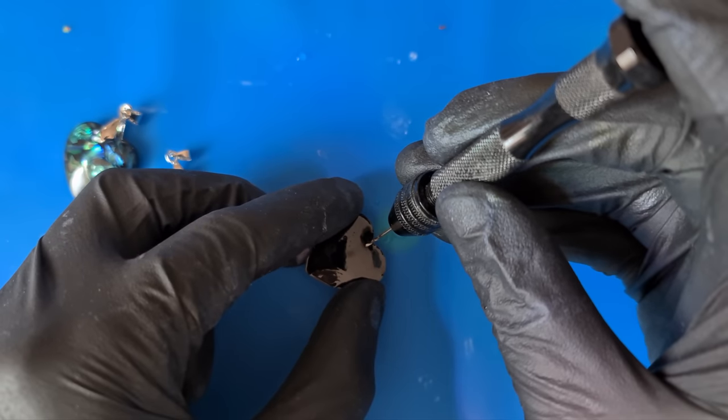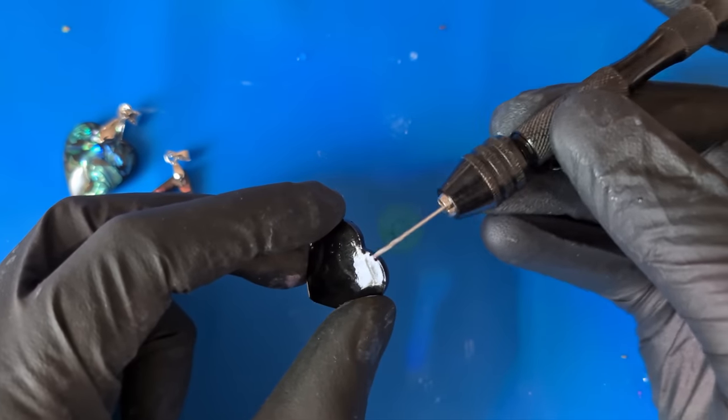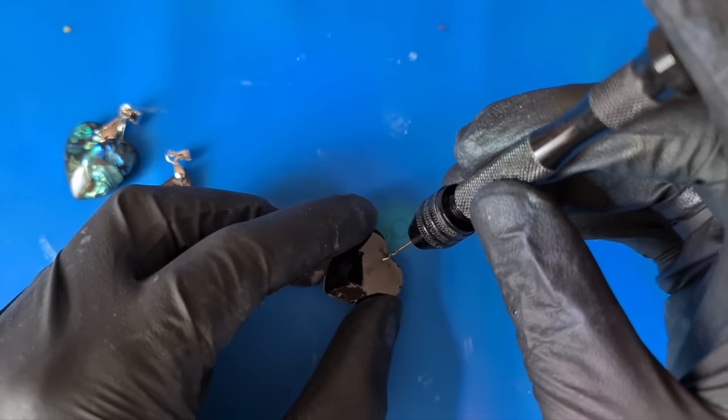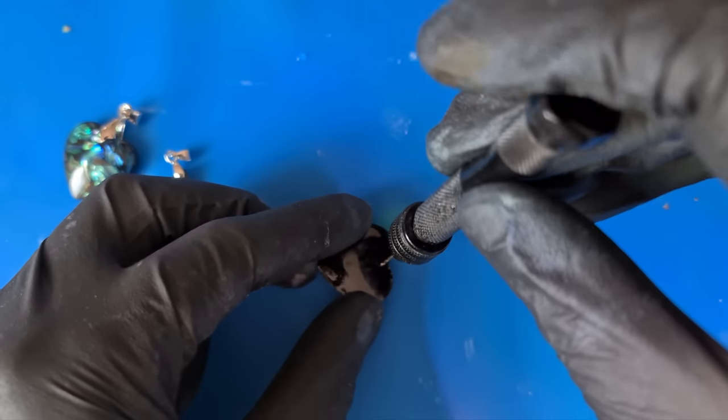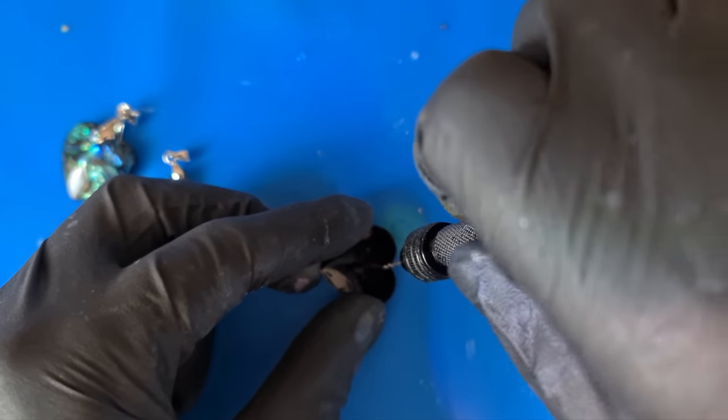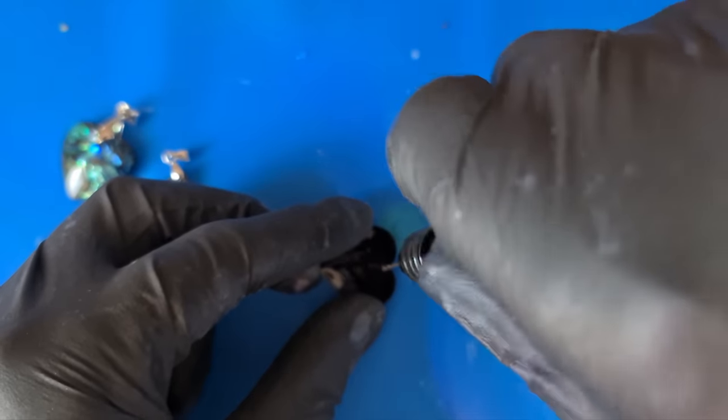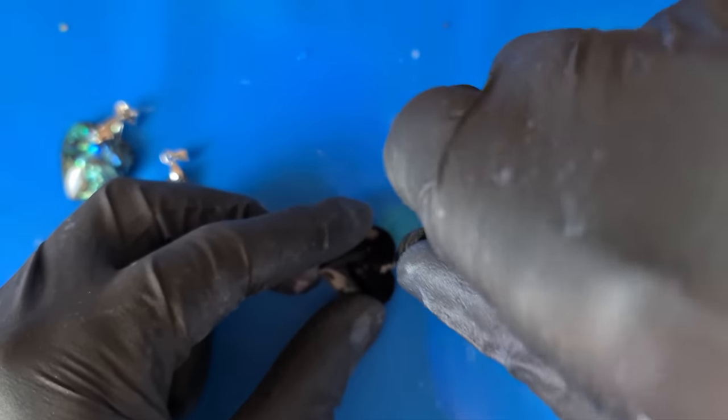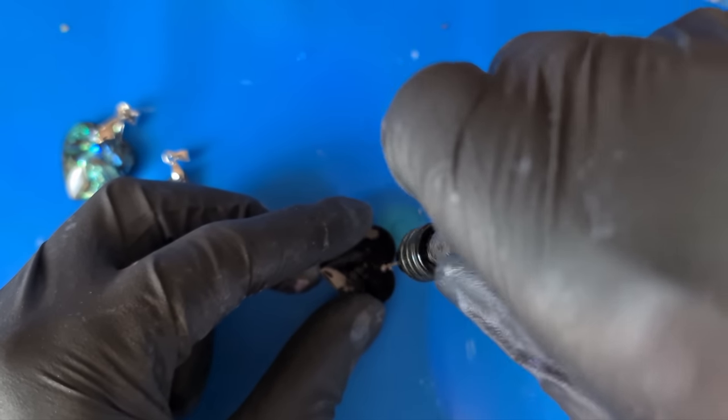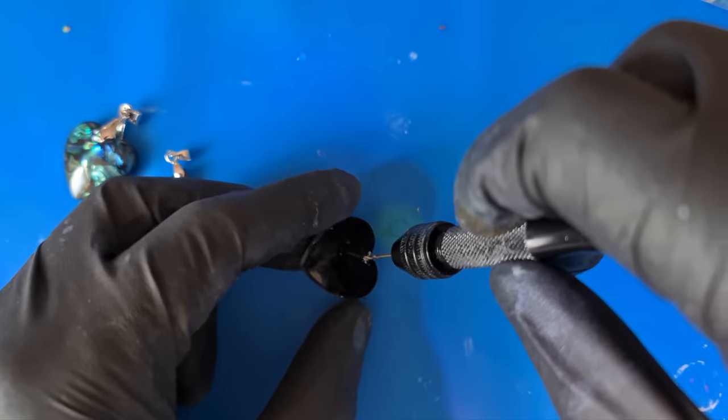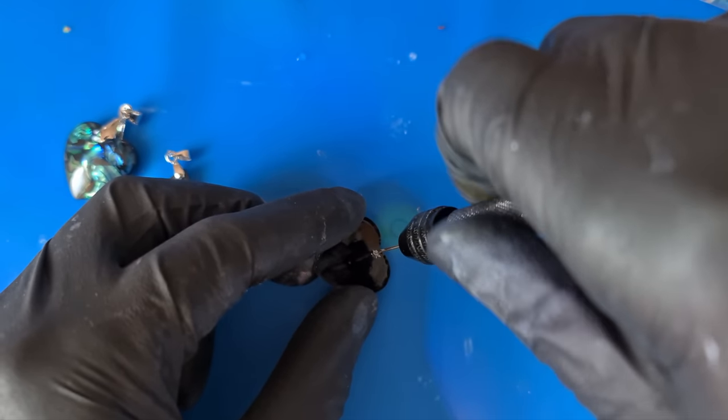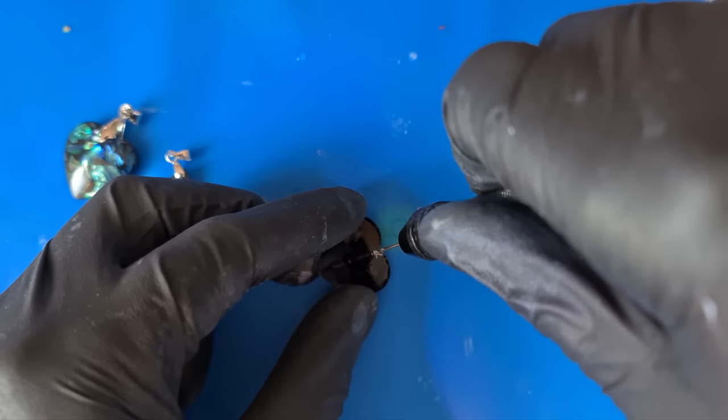So face down, and we drill from the back, because if we try and drill through the front, the drill bit is just going to slide on the surface and scratch. Not too much pressure, and then just begin to turn the hand drill.